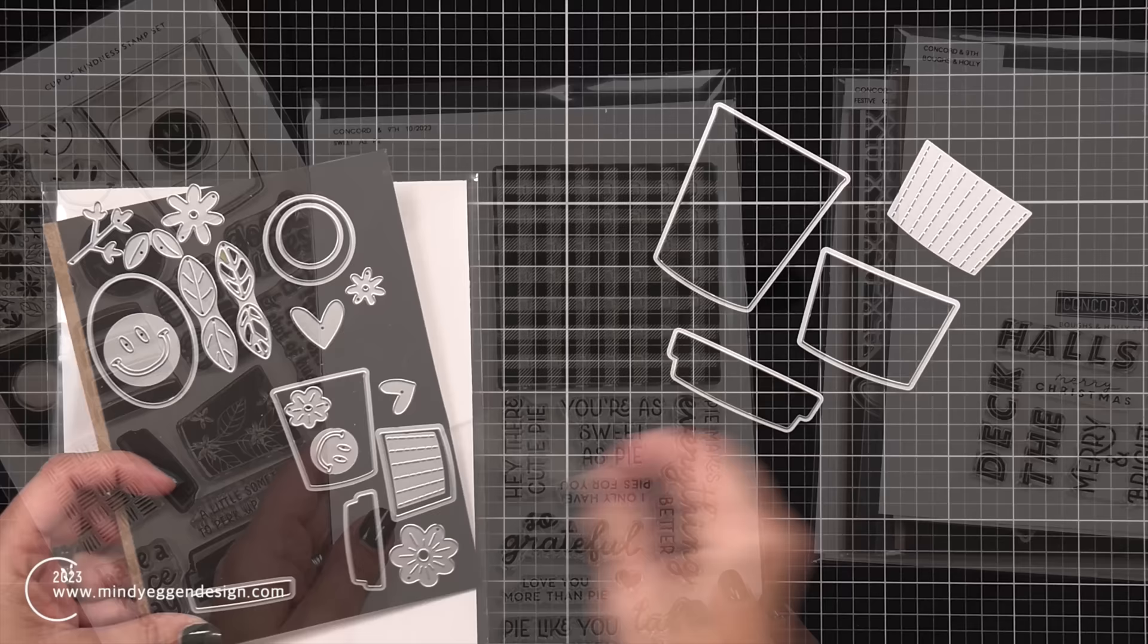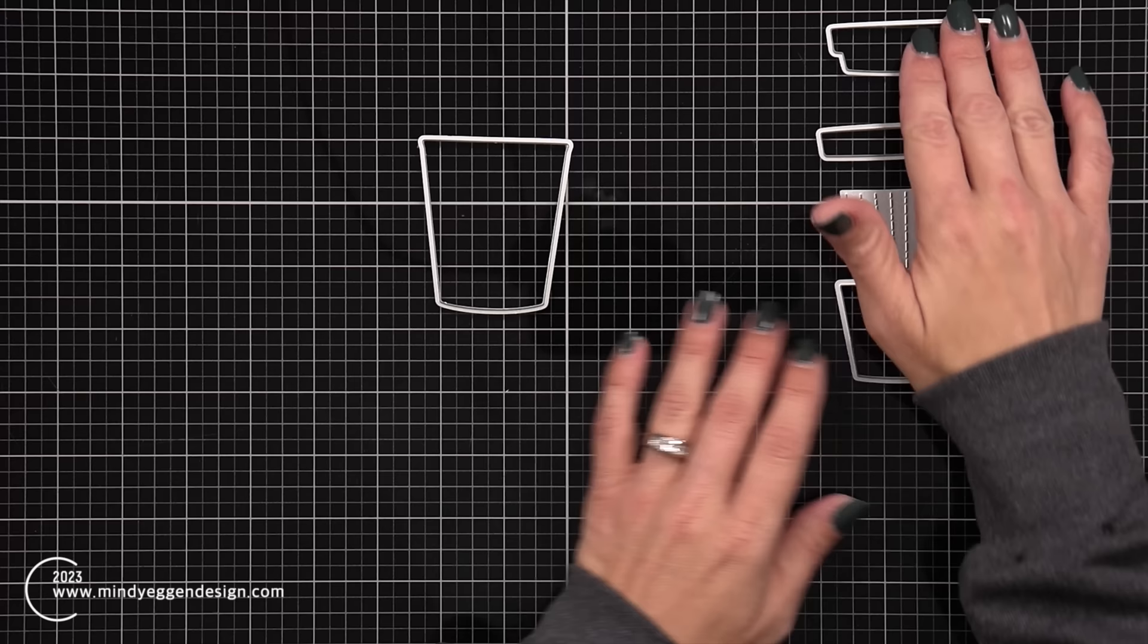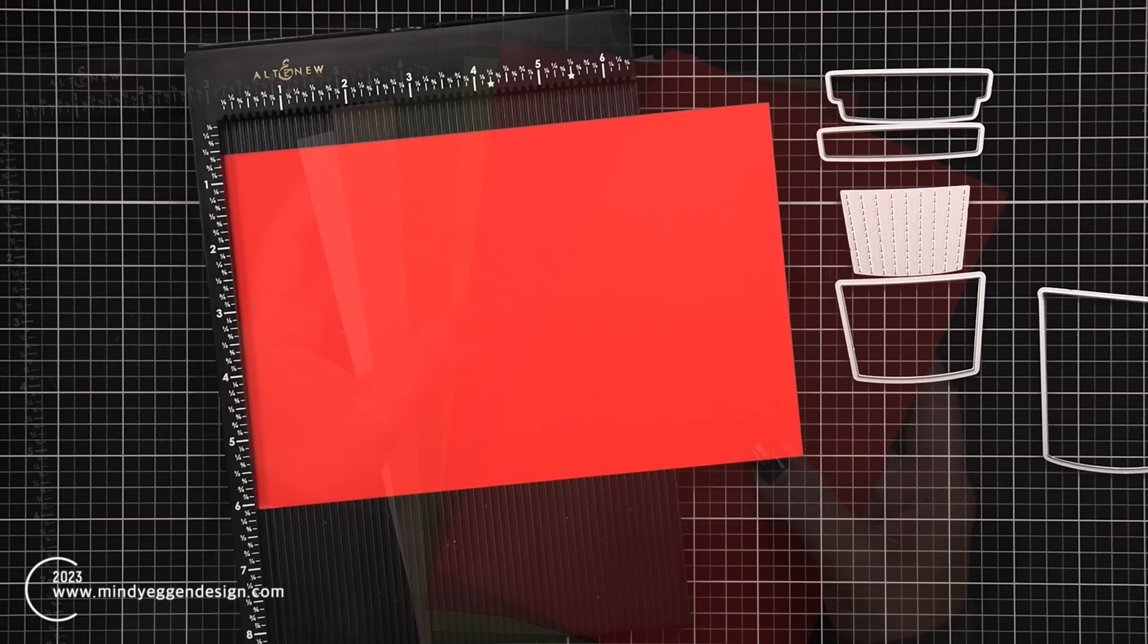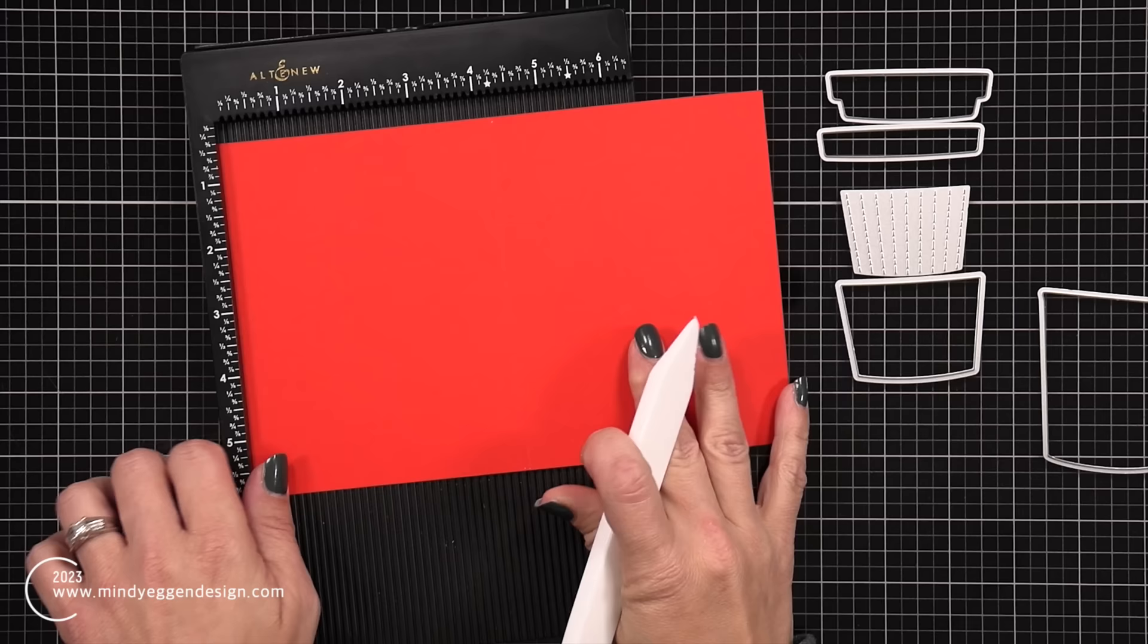So the first thing I need to do is create my actual tags. Now for this I'm really just using the Cup of Kindness dies. I have it for the larger cup, there's also one for a smaller one. I have the main piece and then the sleeve that goes over the top. Now I also have some cardstock colors picked out: white, wheat, cranberry, poppy, artichoke, and I forgot the other name, but I will have them all listed down below in the video description and on my blog.